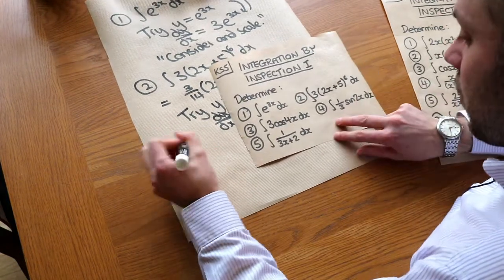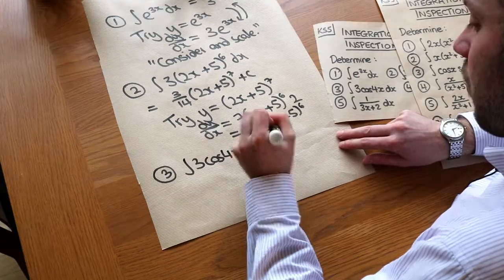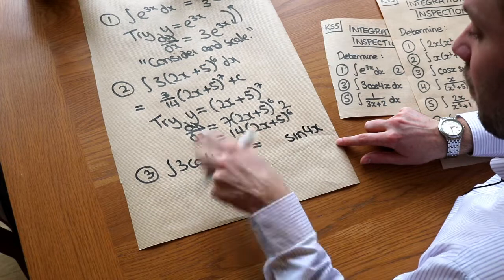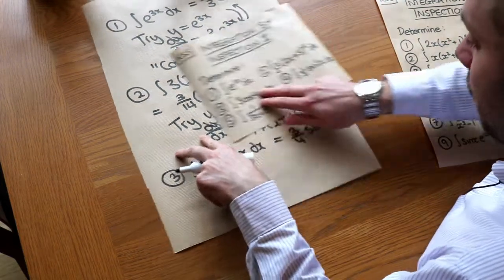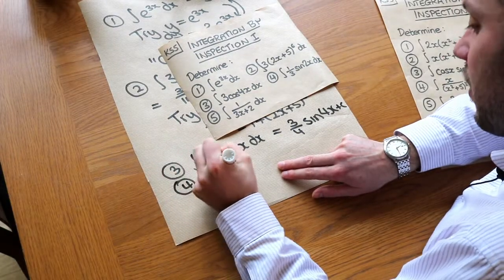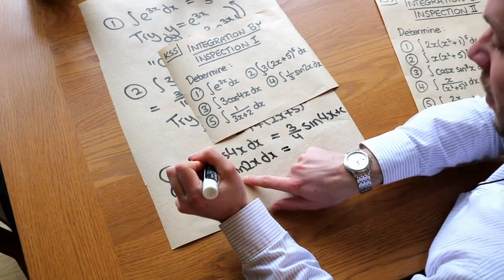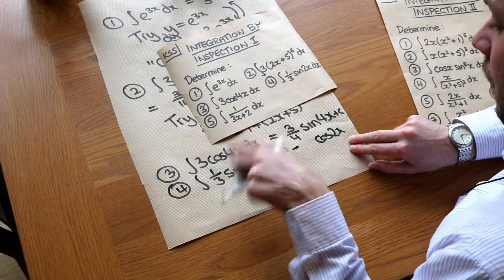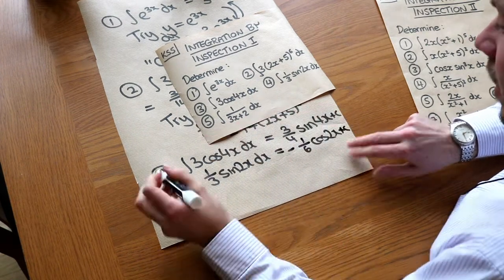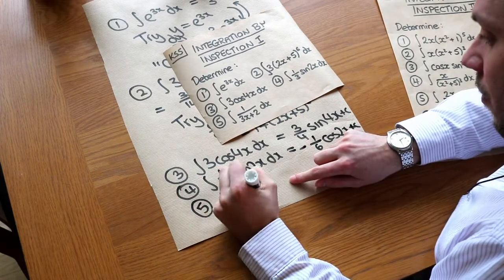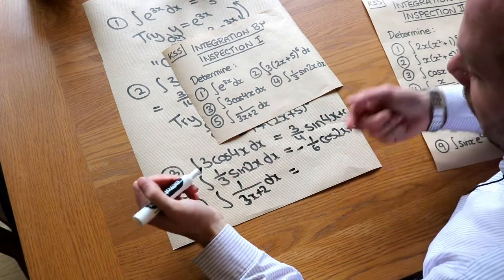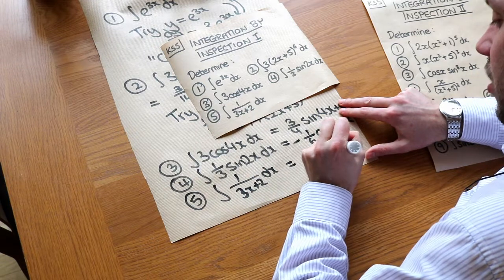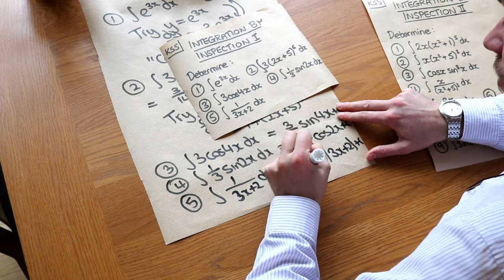For the simpler ones: integrating 3cos(4x) — cos(4x) integrates to sin(4x), but because of the 4 in front of the x we divide by 4, so the answer is 3/4 sin(4x) plus c. Integrating a third sin(2x): sine integrates to minus cosine, and dividing by 2 makes the third become a sixth, giving minus 1/6 cos(2x) plus c. For 1 over (3x + 2): this becomes ln of the modulus of (3x + 2), then divide by 3 to give 1/3 ln|3x + 2| plus c.